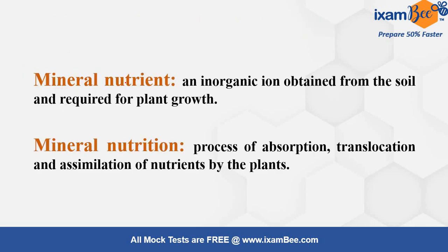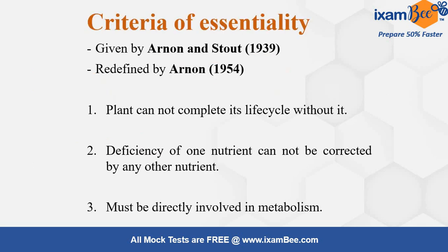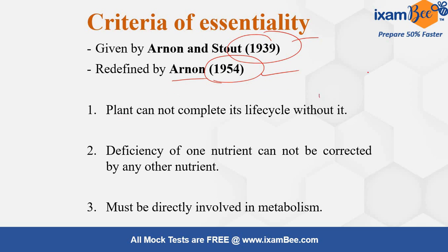What is a mineral nutrient? Any inorganic ion which can be obtained from the soil and is mainly required for plant growth is known as a mineral nutrient, and the process of absorption and assimilation is known as mineral nutrition. The criteria that defines which nutrient is essential was first given by Arnon and Stout in the year 1939. The first criterion: the plant cannot complete its life cycle without it.